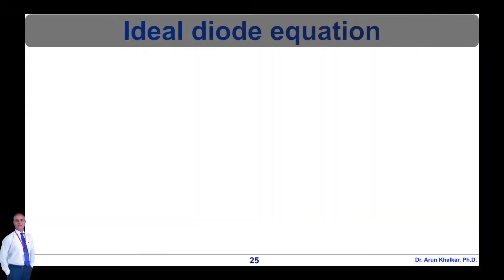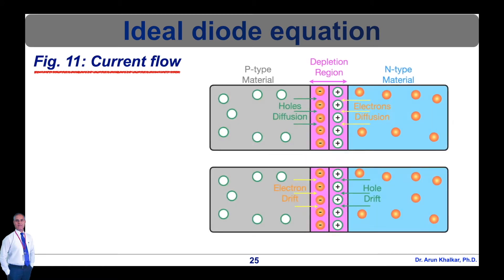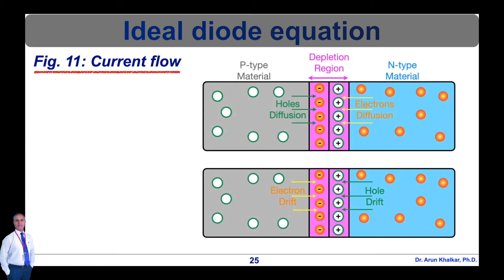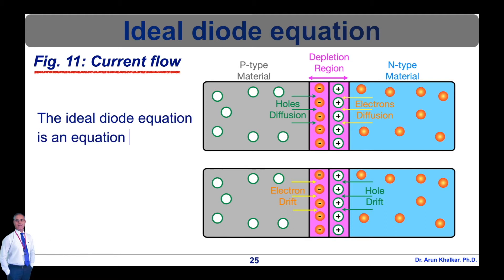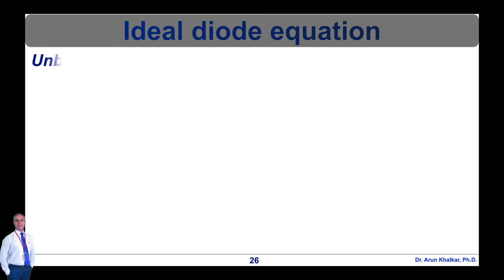Now let's see the ideal diode equation. The current flow through the diode is shown in this diagram, which we have already seen before. The ideal diode equation is an equation that represents current flow through an ideal p-n junction.